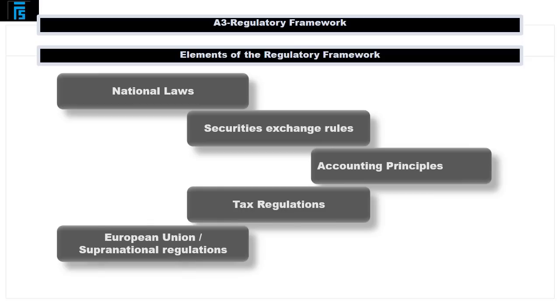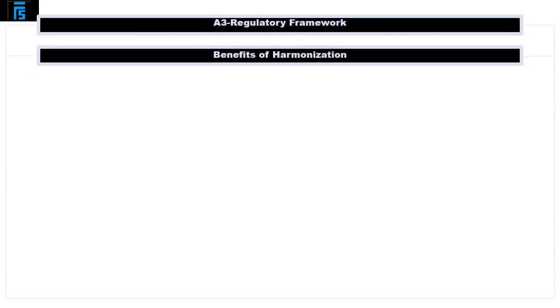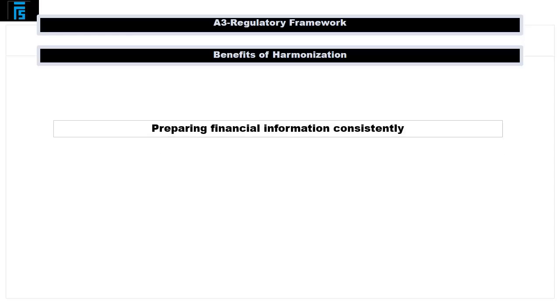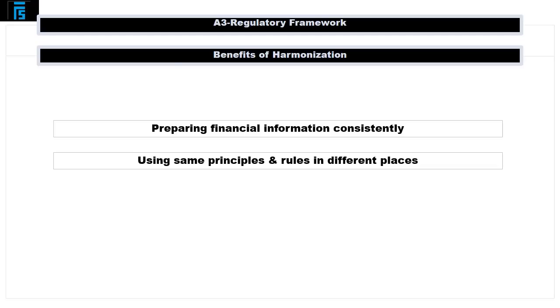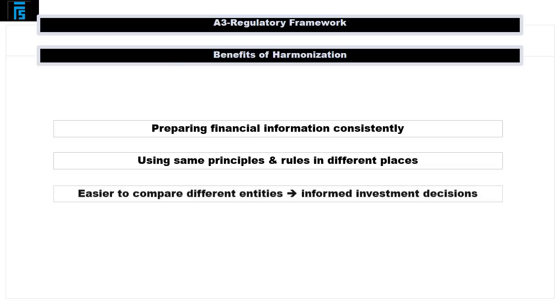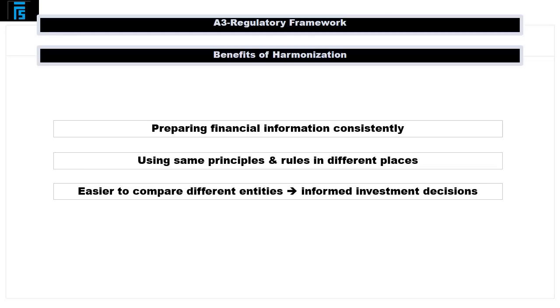When considering the broad regulatory framework, it is important to realize that there are strong tendencies for accounting regulation from around the world to become unified and harmonized. As you can probably imagine, harmonization brings about multiple benefits. Many multinational companies operate on a global scale, and if financial information from different countries is prepared on a consistent basis, it makes reading and interpreting the numbers and generally doing business a lot easier. The preparation of financial information also uses up fewer resources if it can be done using the same principles in different places. Also, consolidating the results from different parts of a multinational company becomes easier if all countries follow the same rules.